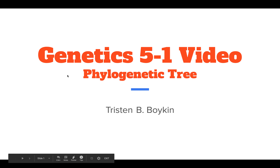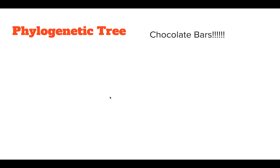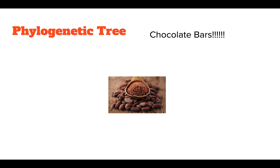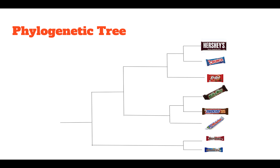We're going to look at a phylogenetic tree. Phylogenetic trees, like many things, can be a little bit complicated, so we are going to use chocolate bars to look at them. I like to think about them all branching from this cocoa plant, this cocoa bean. We're going to use eight pretty common chocolate bars, and I have made a phylogenetic tree showing which ones are more closely related.